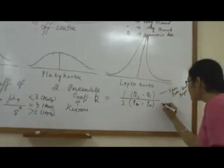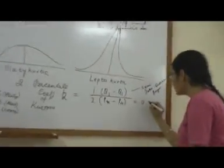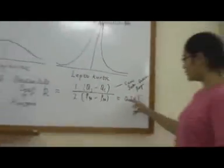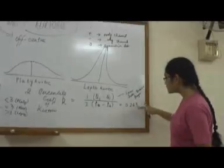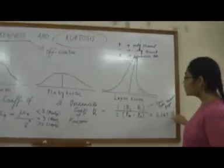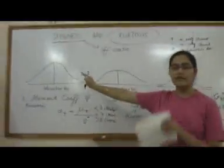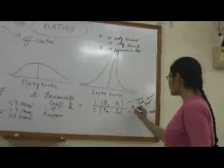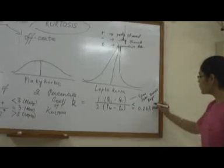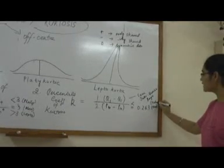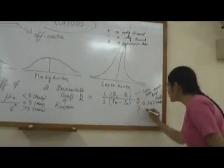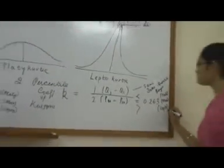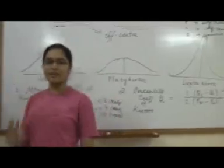If you get an answer equal to 0.263, this is the standard value, meaning your distribution is normal, which is mesokurtic. Similarly, if your answer is less than 0.263, your distribution is platykurtic. Whereas if your answer is greater than 0.263, your distribution is leptokurtic. That's all about skewness and kurtosis.